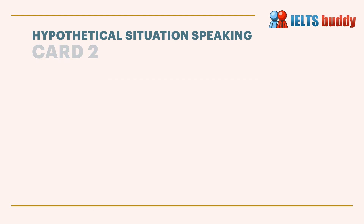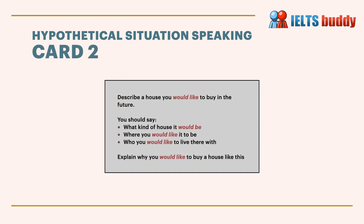Here's another example: 'Describe a house you would like to buy in the future.' There's obviously an unreal situation because you haven't bought the house. You should say what kind of house it would be, where you would like it to be, who you would like to live there with, and explain why you would like a house like this.